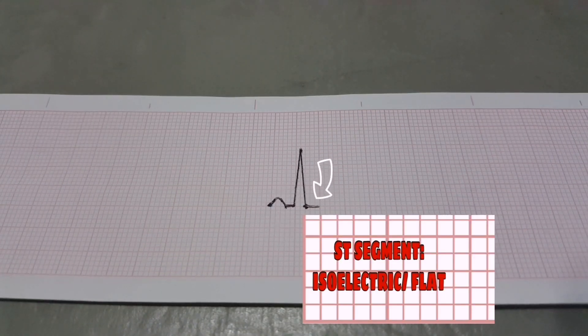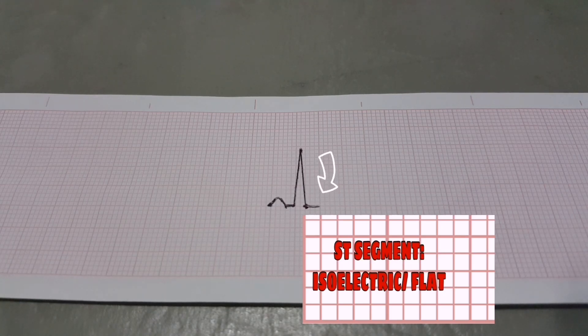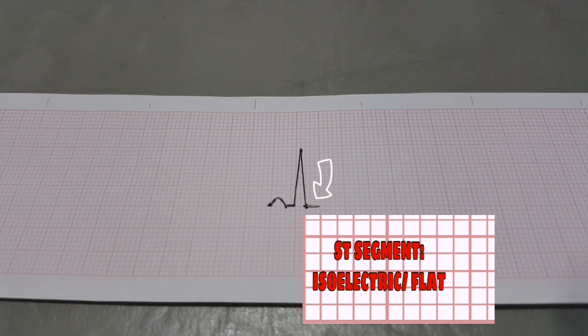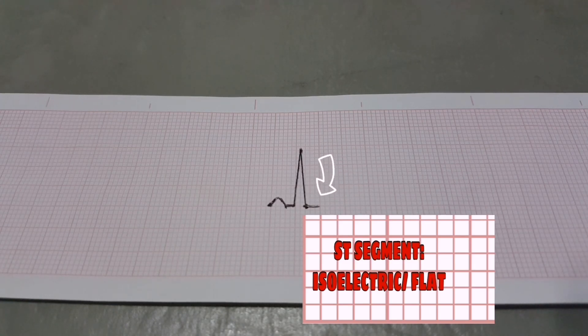The isoelectric period, ST segment, following the QRS and ending at the beginning of T-wave is the time at which both ventricles are completely depolarized. This segment roughly corresponds to the plateau phase of the ventricular action potential.